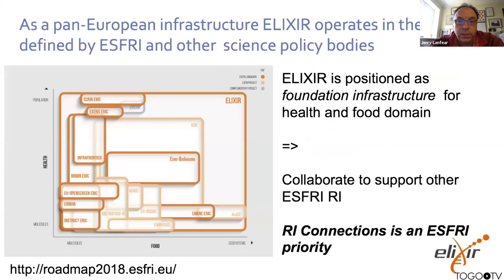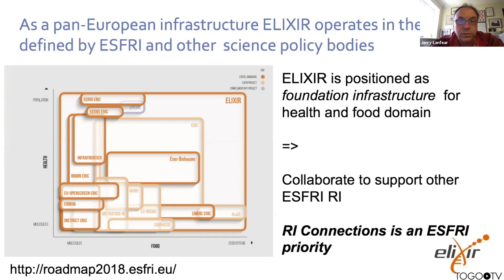ELIXIR fits into a broader landscape of European infrastructures. The figure illustrates how ELIXIR is positioned as a foundational data infrastructure for the health and food domain. All the other boxes are other research infrastructures within Europe that have various functions — bioimaging, biobanking, clinical trials, and so on — supporting much of the work going on around COVID-19 research. ELIXIR fits into that landscape as an underpinning infrastructure, and we closely collaborate with those other research infrastructures.